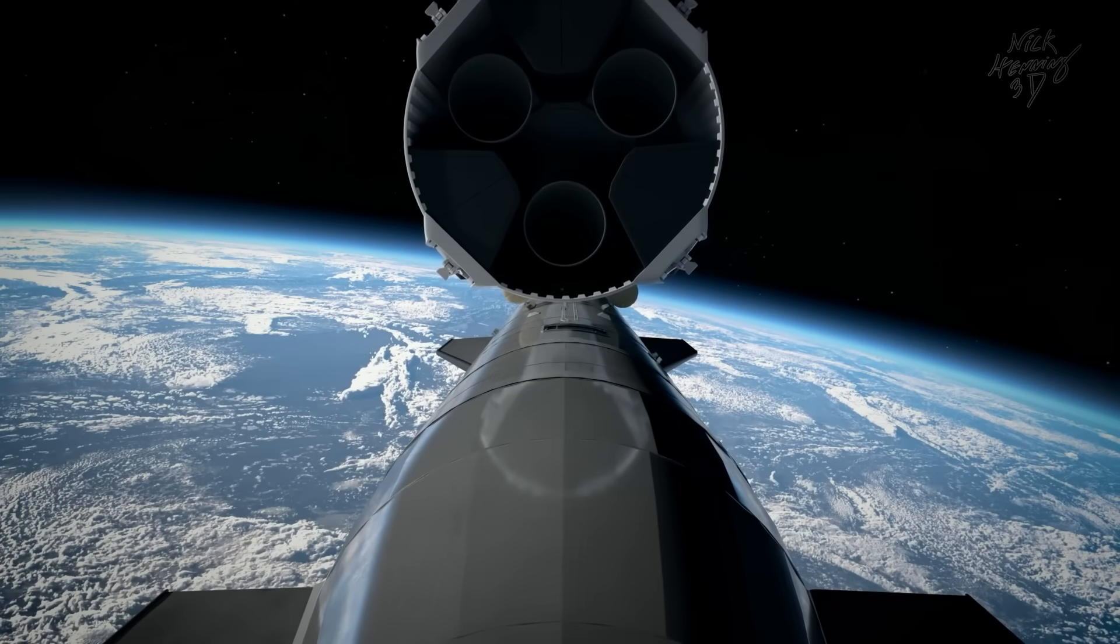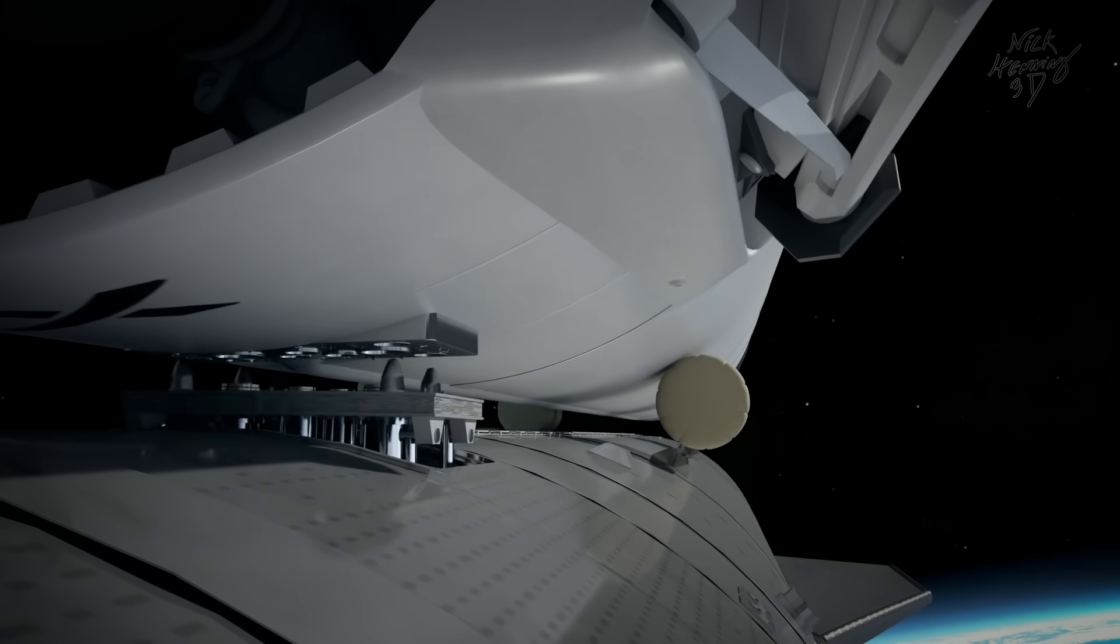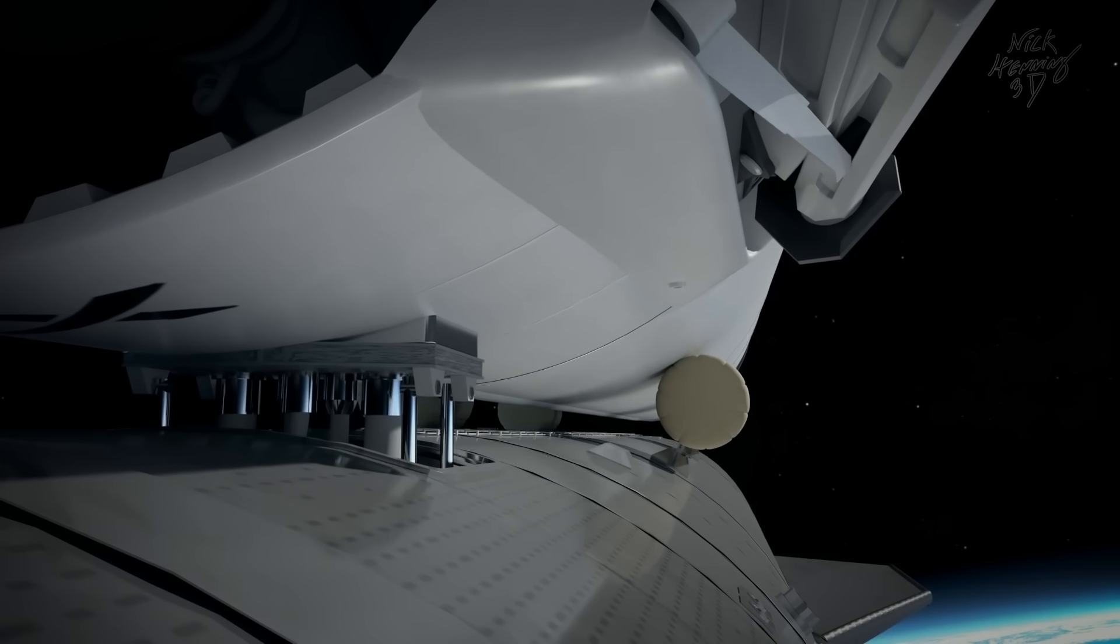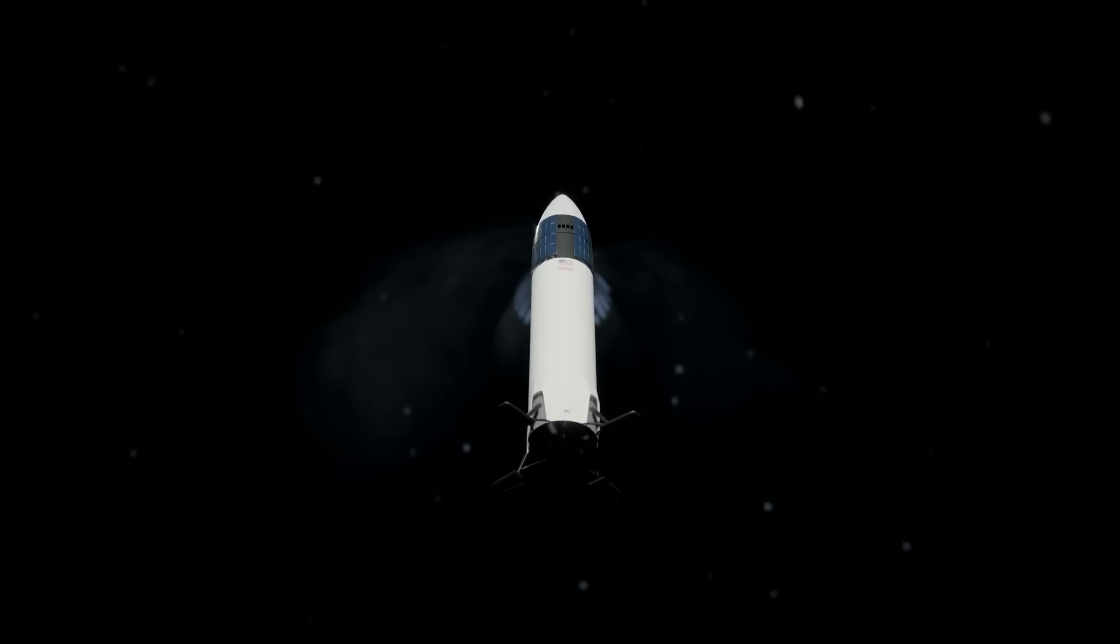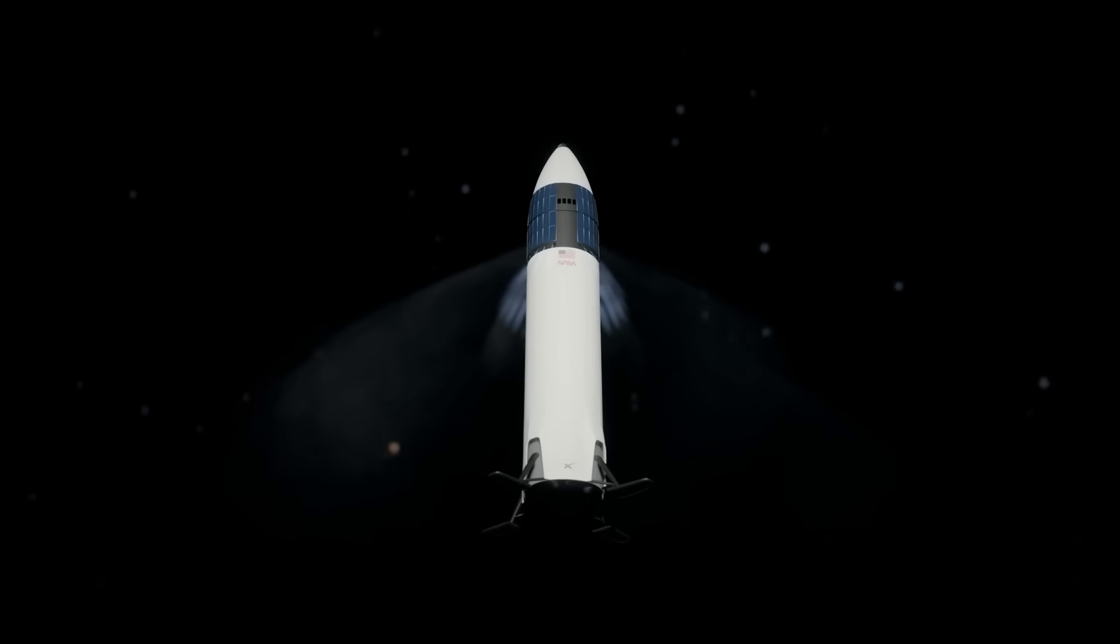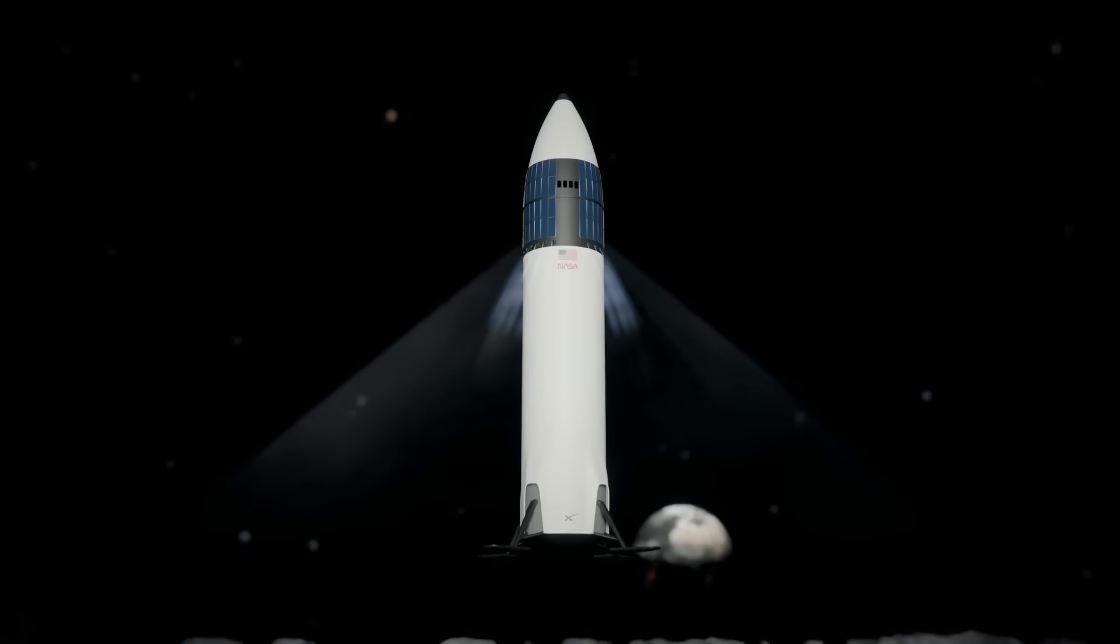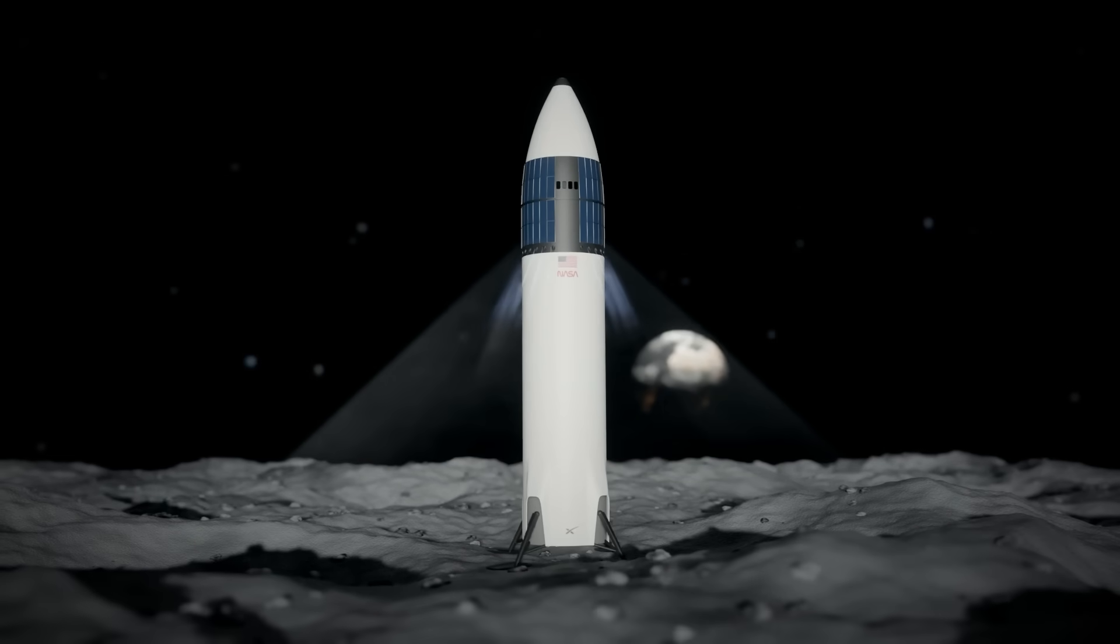SpaceX has to move fuel from one ship to another ship, meaning that we are going to see two ships in orbit at the same time so they can link up and dock together. We are going to see this done many, many times before Starship can be considered for landing on the Moon.